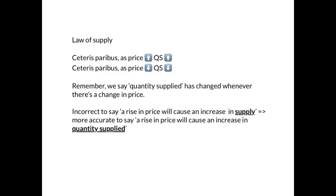The law of supply states that, Ceteris Paribus — all other things held constant — as price rises, quantity supplied increases, and as price falls, quantity supplied decreases. So there is a positive relationship between price and quantity supplied.